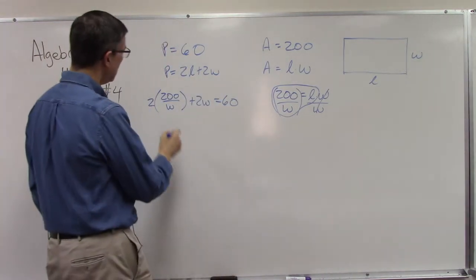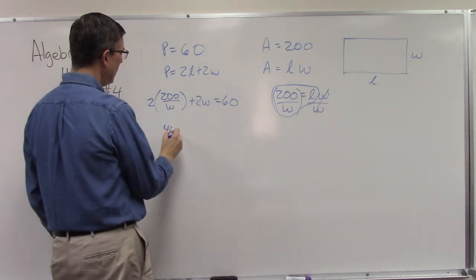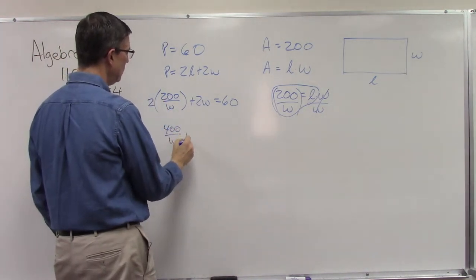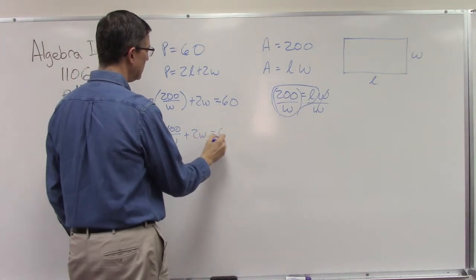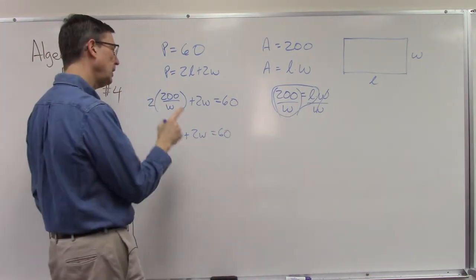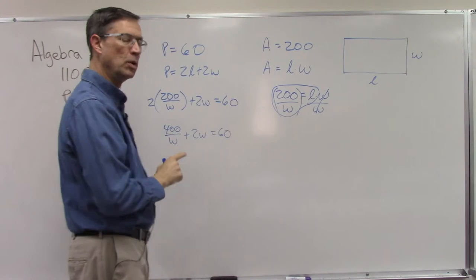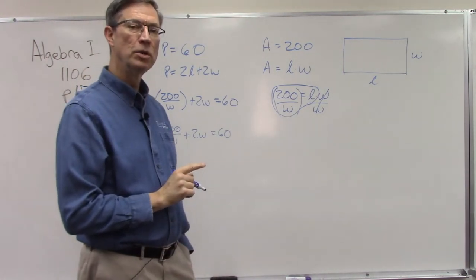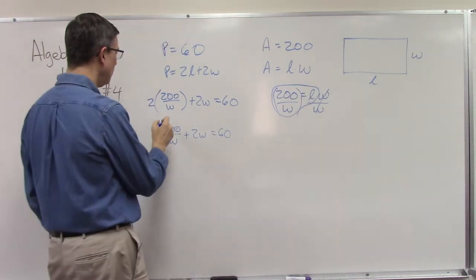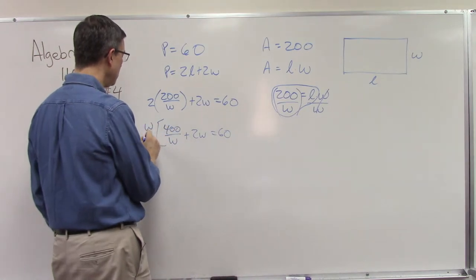Now when I distribute this out, I get 400 over w plus 2w equals 60. But I need to get rid of this w, so to get rid of the w in the denominator, we need to multiply everything in the equation by w.